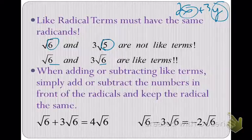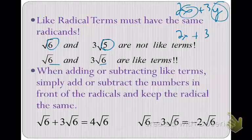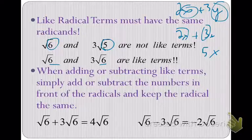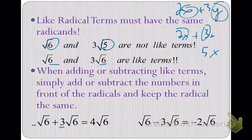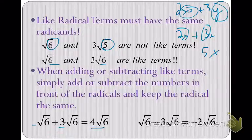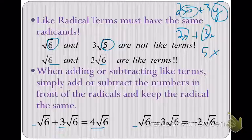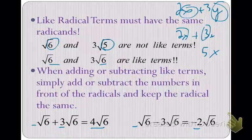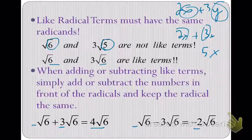When you're adding and subtracting, it's like when you have like terms with variables — you simply add the coefficients. Same thing here: when you have like radical terms, you just add the numbers out in front. So 1 plus 3 is 4, giving you 4 square root of 6. And if you subtract — 1 radical 6 minus 3 radical 6 — you just subtract the numbers on the outside and get negative 2 radical 6. You leave the radicands alone, just like you leave the x's alone and just add the coefficients.